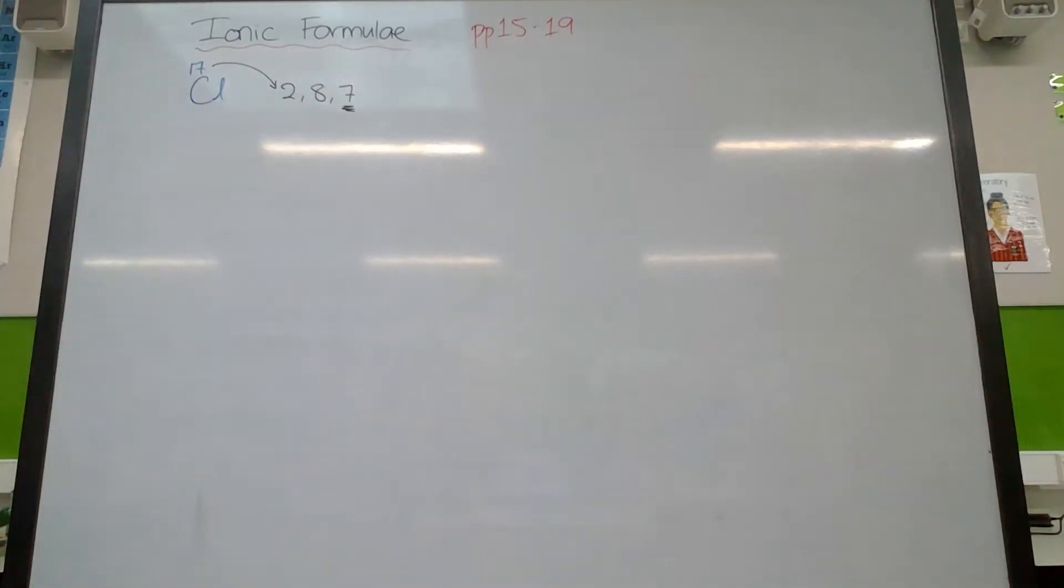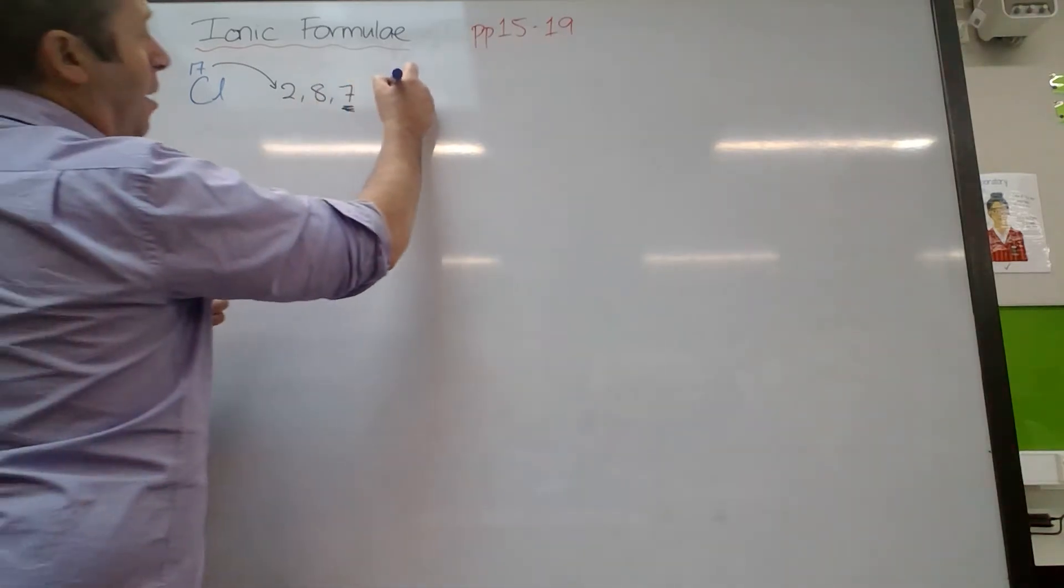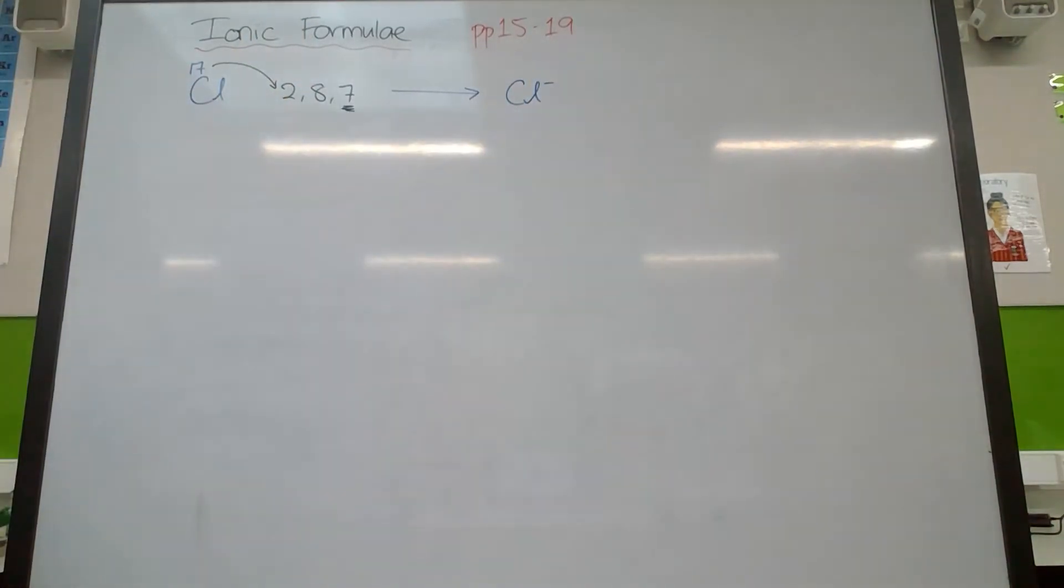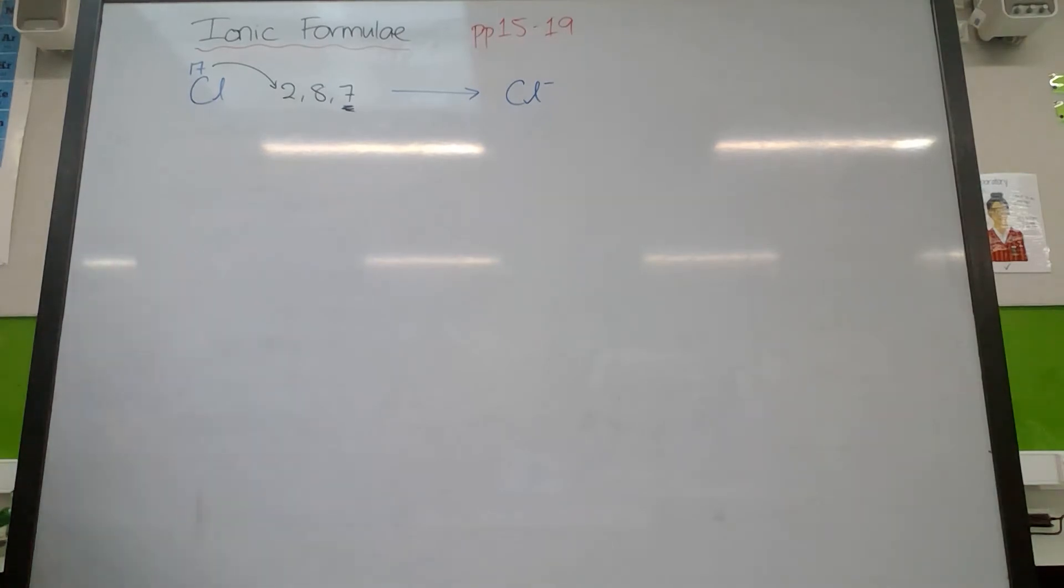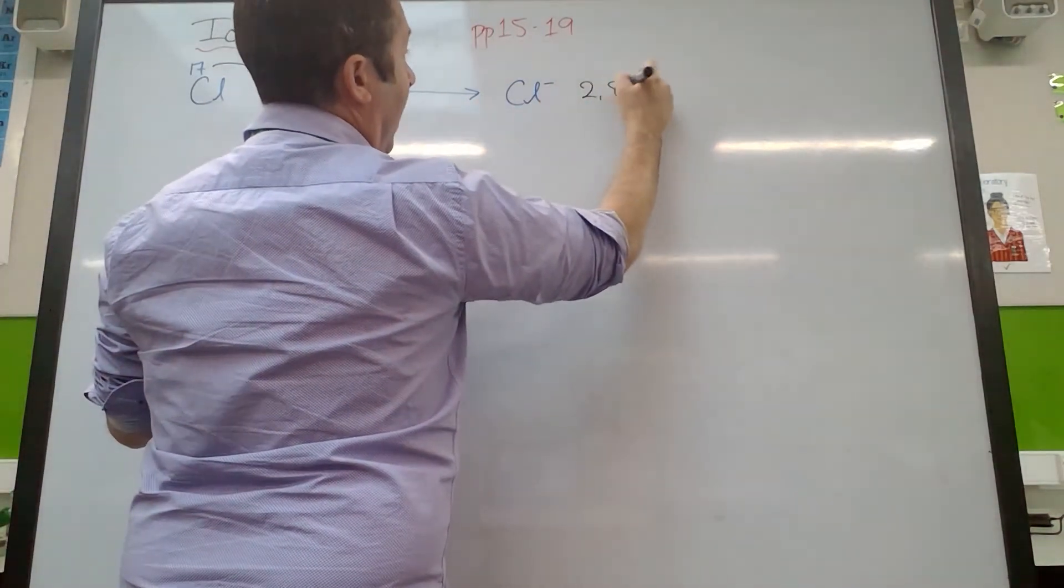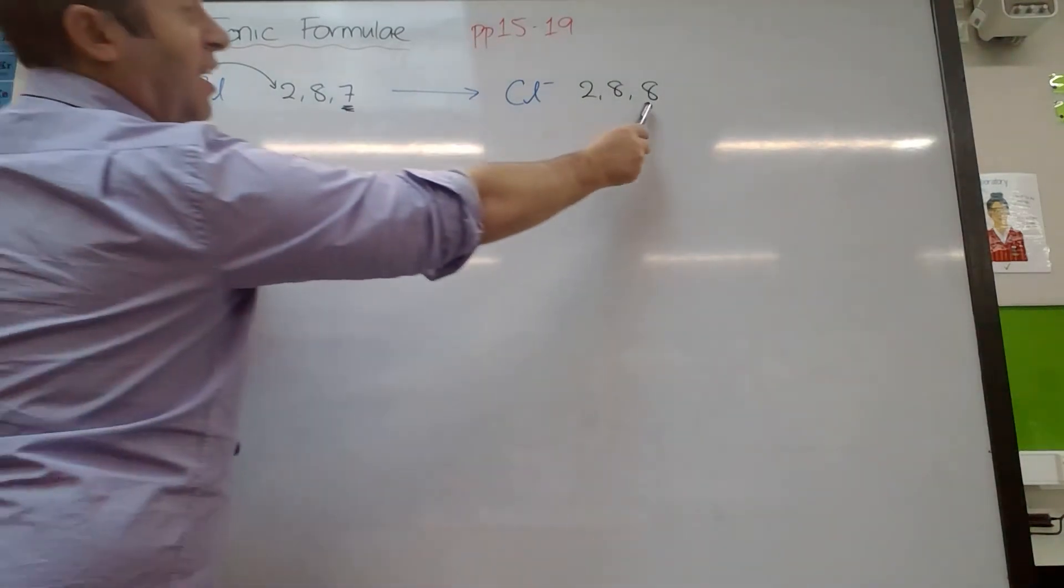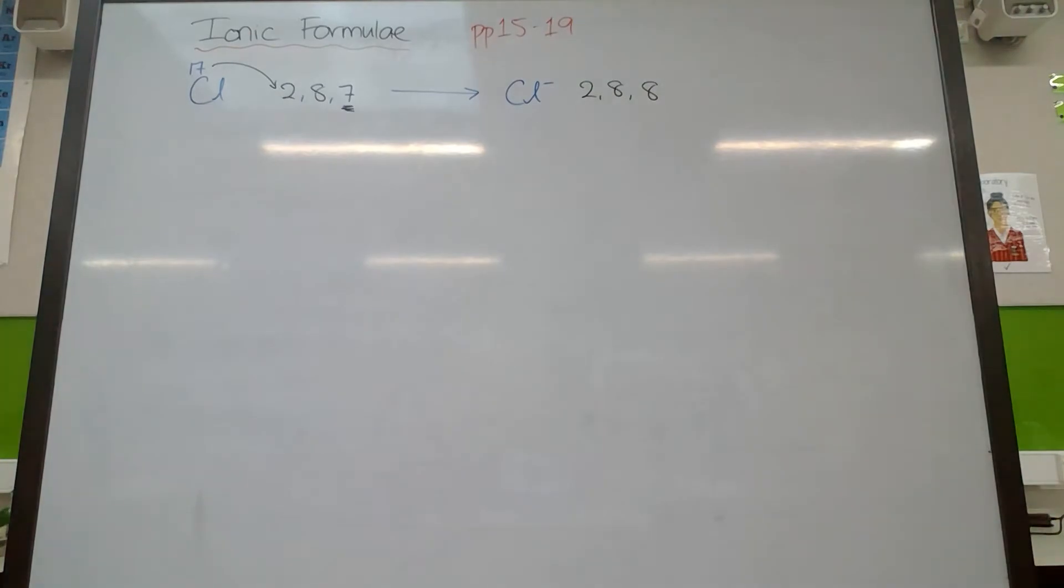So we knew that it had seven valence electrons. We also therefore should know that to be stable, to be more stable, it needs one more electron, either to share one electron with something else, or to grab an electron of something else. So chlorine can become a chloride ion with a negative 1 charge by gaining one more electron. So it's going to have 2, 8, 8 as its electron configuration, which is stable because it's got 8 electrons in its valence or outer shell.